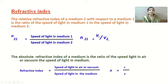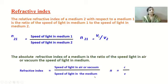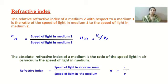There is also something called the absolute refractive index. The absolute refractive index of a medium is the ratio of the speed of light in air or vacuum to the speed of light in the particular medium. So n = c/v, where c stands for the speed of light in air or vacuum and v is the speed of light in the medium.